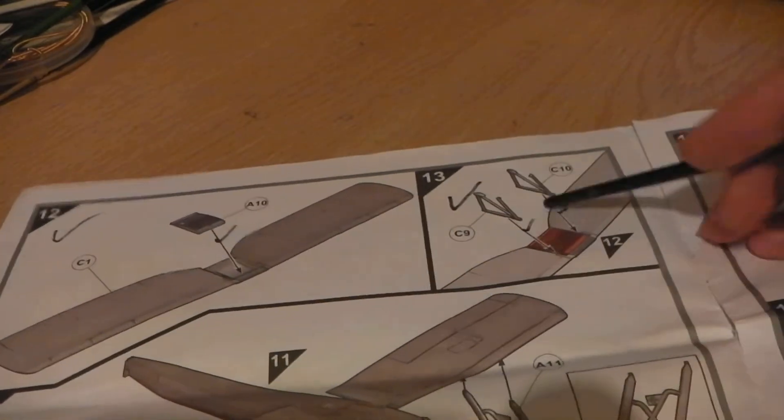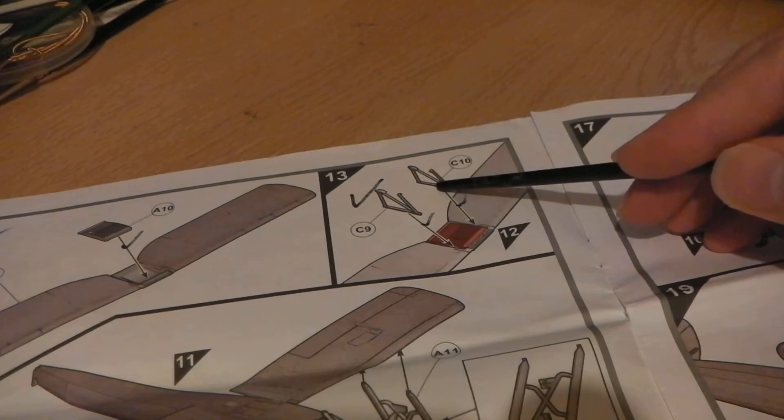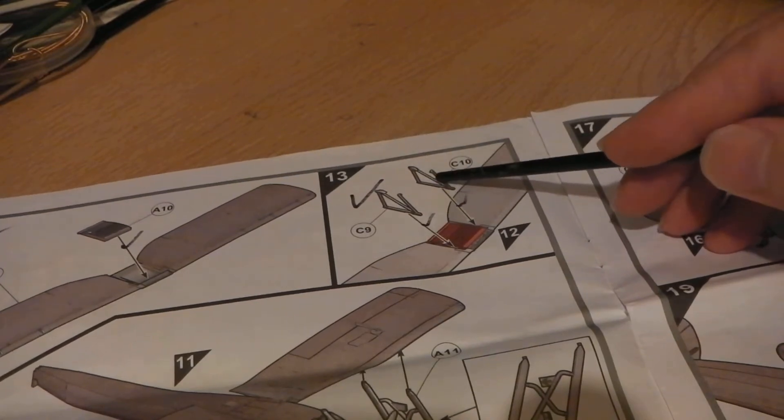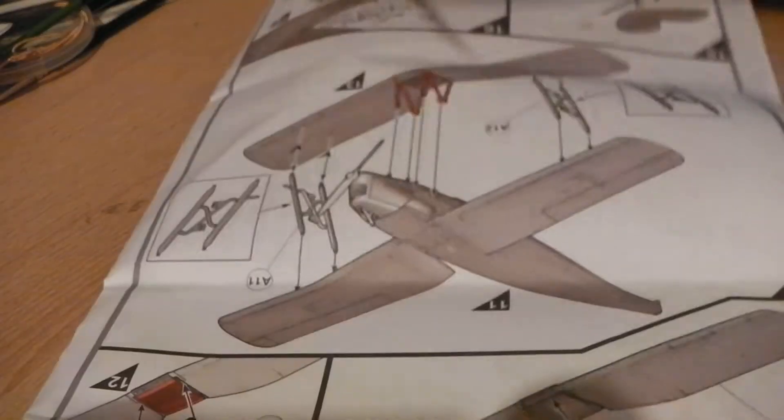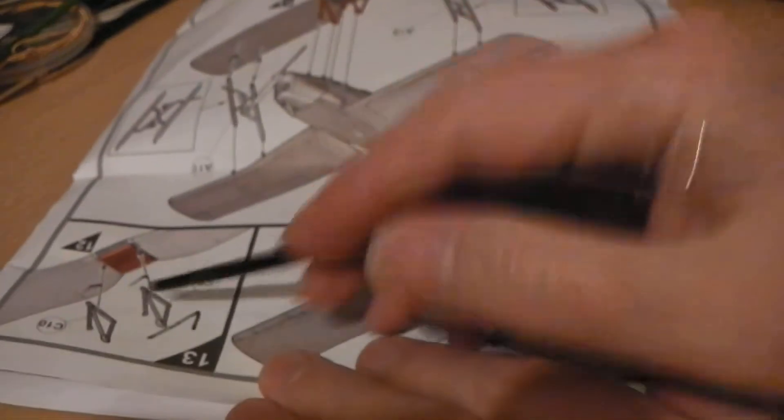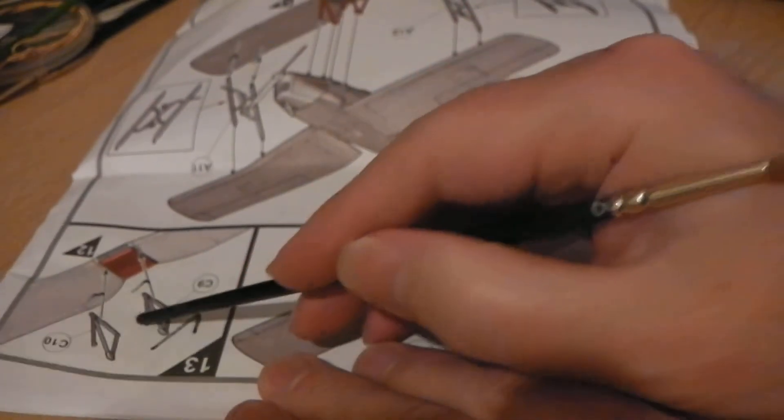Now, another thing I would do differently with the instructions is I would suggest that the center struts, this part of it, as you can see, they go on the side of the fuselage.